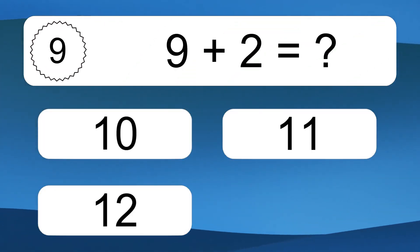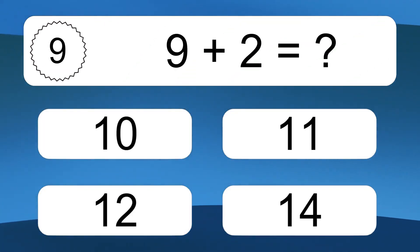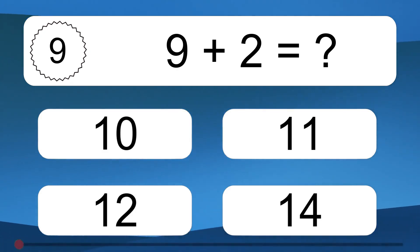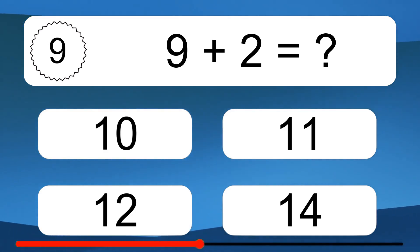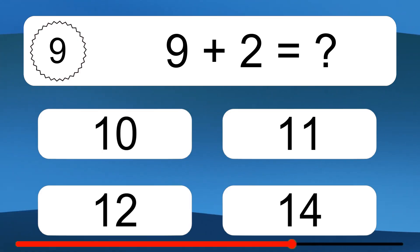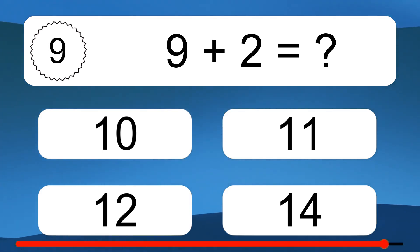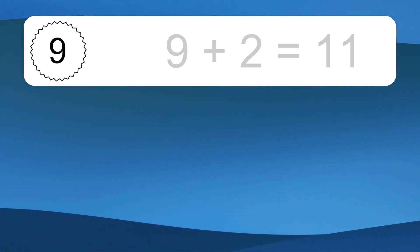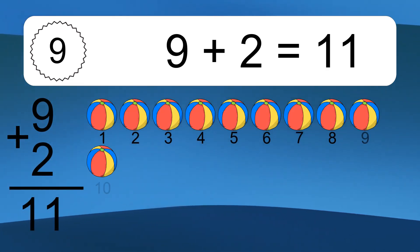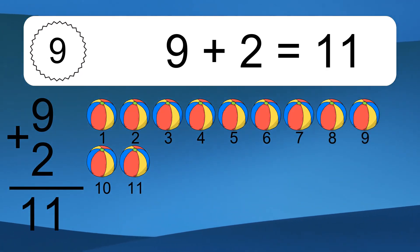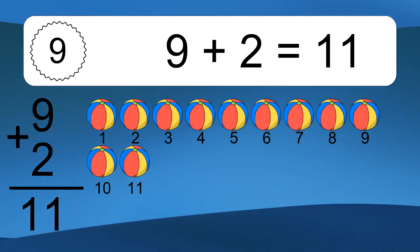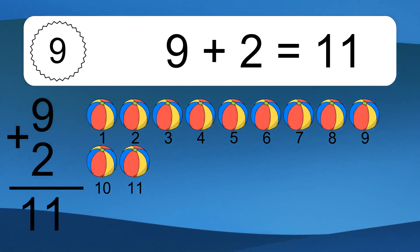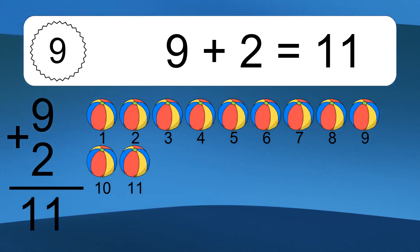9 plus 2 equals what? 9 plus 2 equals 11. Let's count it. 1, 2, 3, 4, 5, 6, 7, 8, 9, 10, 11.